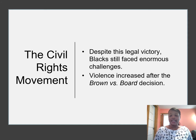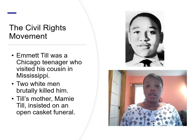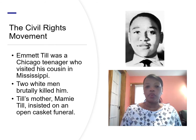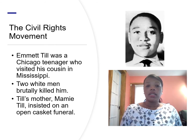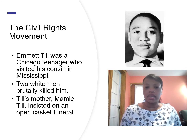African Americans celebrated this legal victory. Nevertheless, they continued to face enormous challenges. Violence from white supremacists increased after the Brown decision. The murder of Emmett Till in 1955 was one horrific example. Emmett Till was a Chicago teenager who visited his cousin in Mississippi. He was brutally murdered by two white men after he allegedly whistled at one of their wives. Till's mother, Mamie Till, insisted on an open casket funeral. The disturbing images of his disfigured body became a brutal symbol of white violence and a rallying cry for Black activists.